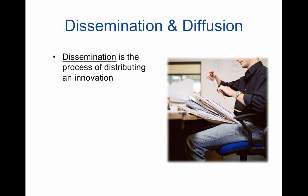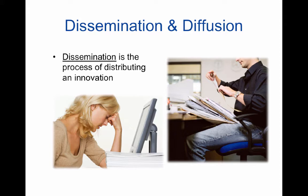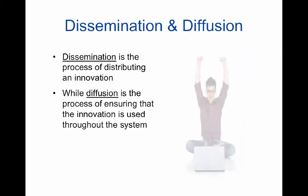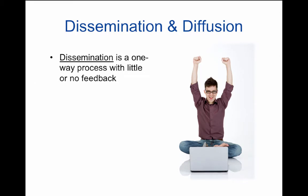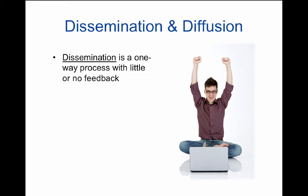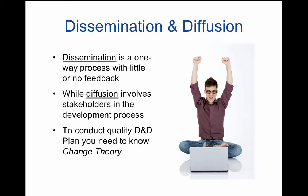Dissemination is the process of distributing an innovation. We can think of our ideas as being very creative and exciting. However, on the other end, when people receive them, they might perceive it as just a lot more work and change that they didn't need. While diffusion is the process of ensuring that an innovation is used throughout the system, dissemination is typically a one-way process with little or no feedback — you just send out materials — while diffusion involves stakeholders in the development process. To conduct a quality dissemination and diffusion plan, you really need to know about change theory.